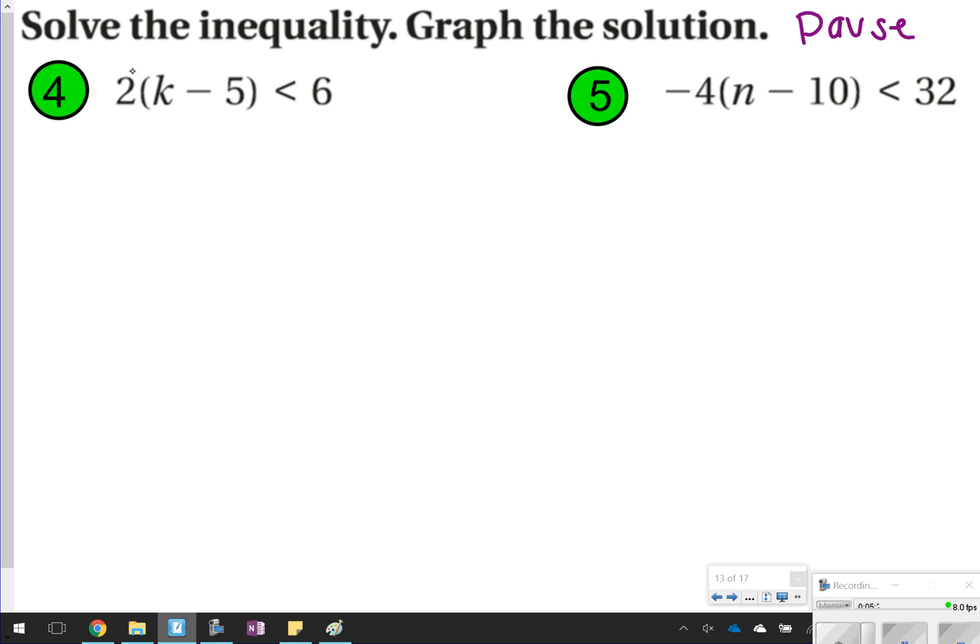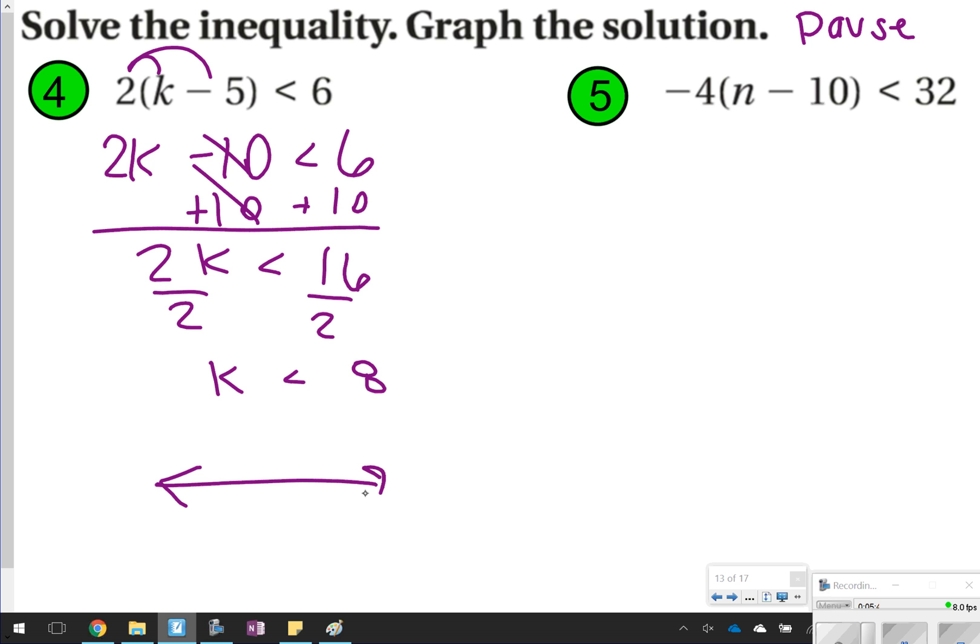So number 4 will look like this. We're going to have 2 times k, which is 2k, and 2 times negative 5, which is negative 10, is less than 6. I'm going to add 10 to both sides. So it'll be 16 less than, those 10s cancel out, and we're still left with 2k. I'm going to divide both sides by 2. k is less than 8. On my graph, I'll have 8 in the middle, 7 and 9 on either side, open circle pointing to the left.